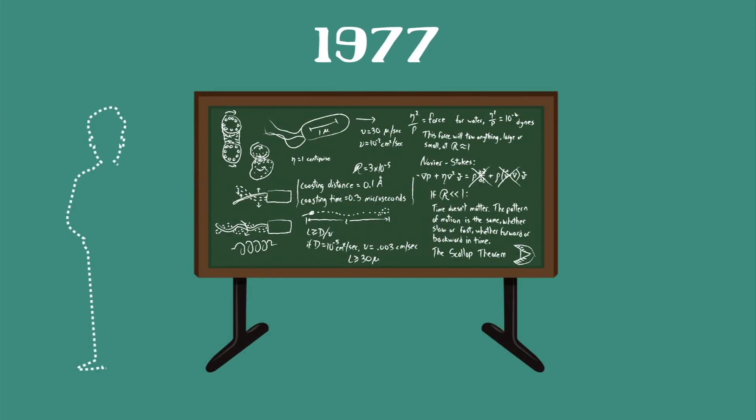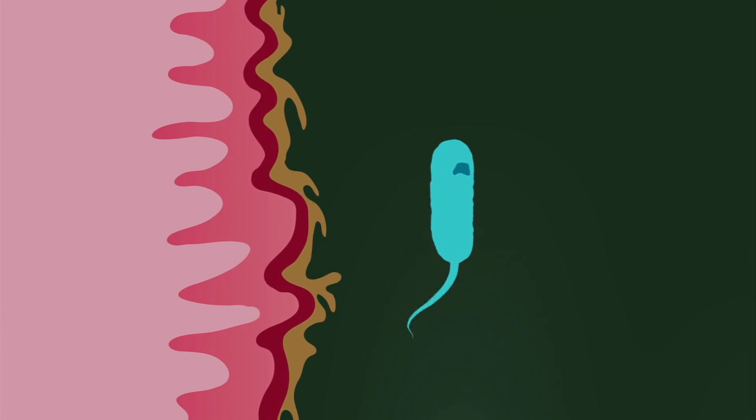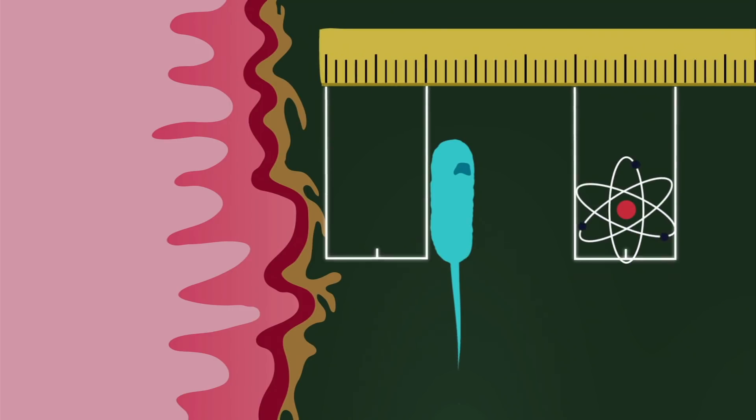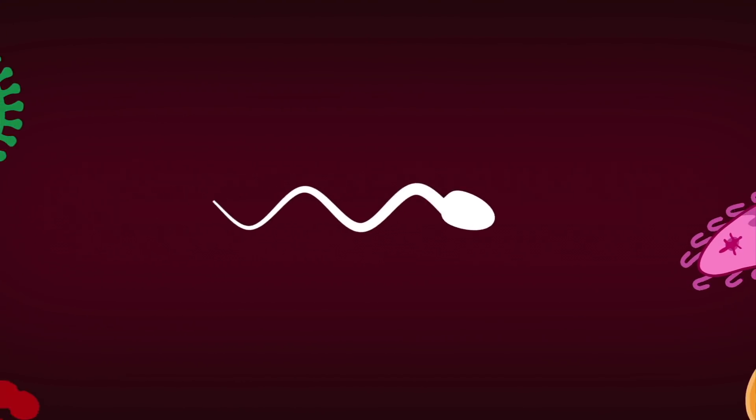In 1977, the physicist Edward Purcell calculated that if you push a bacteria and then let go, it will stop in about a millionth of a second. In that time, it will have traveled less than the width of a single atom. The same holds true for a sperm and many other microbes.